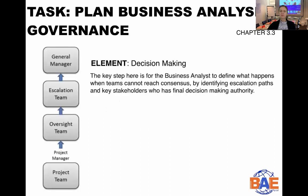Let's start with decision making. The key step here is for the business analyst to define what happens when teams cannot reach consensus, by identifying escalation paths and key stakeholders who have final decision-making authority — especially with bigger initiatives where a lot of people are involved. This is quite an important escalation strategy that you need to define upfront in collaboration with the rest of the project team.